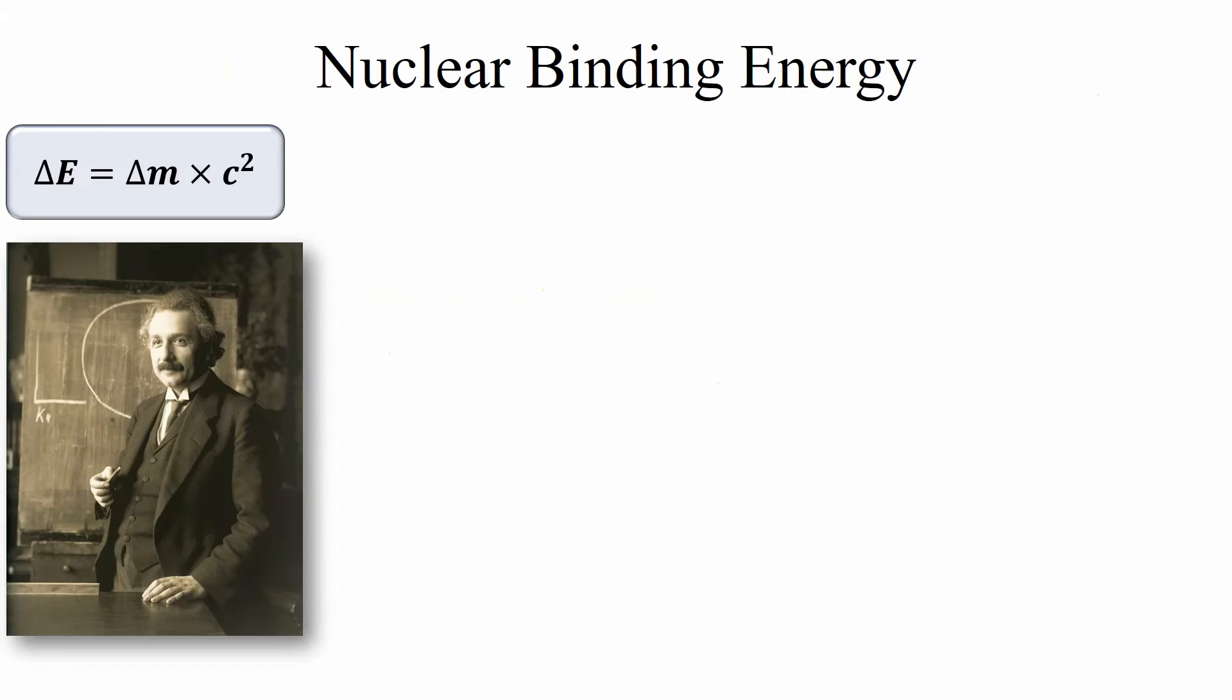Now what is this nuclear binding energy and what's the deal with it? Well for this we have to go back to our old friend Einstein and his special relativity equation E equals MC squared or in this case the change in energy equals the change in mass times the speed of light squared.